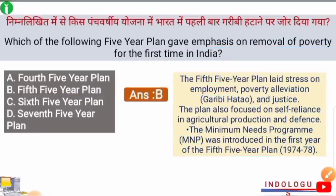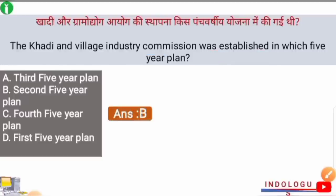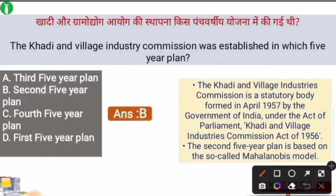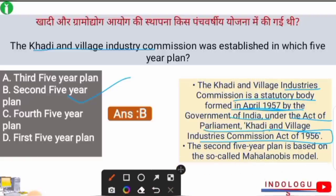Next question: In which Five Year Plan was the Khadi and Village Industries Commission established? The right answer is option B — the Second Five Year Plan. The Khadi and Village Industries Commission is a statutory body formed in April 1957 by the Government of India under an Act of Parliament. The Second Five Year Plan was based on the P.C. Mahalanobis model, so it is also called the Mahalanobis model, and P.C. Mahalanobis was the architect of the Second Five Year Plan.